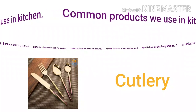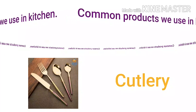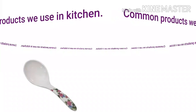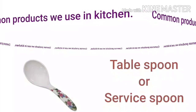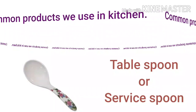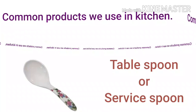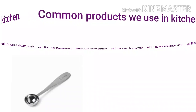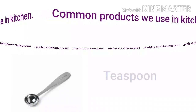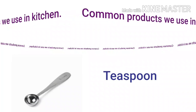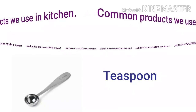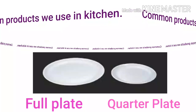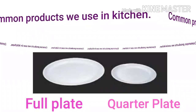Knife, spoon, fork — in ko together hum kya bolte hai? Cutlery. Jis bade spoon se hum sabziyon ko serve karte hai, usko hum tablespoon ya phir service spoon kehte hai. And next we have teaspoon — teaspoon hota hai jisse hum sugar or salt ko mix karte hai; it is known as teaspoon.